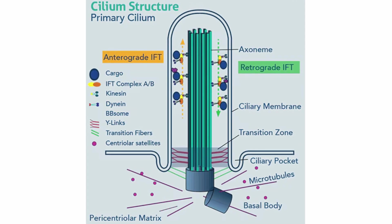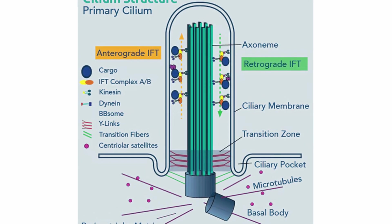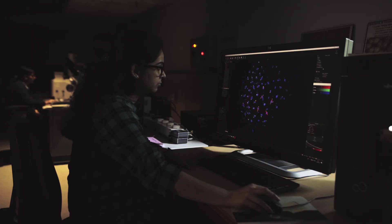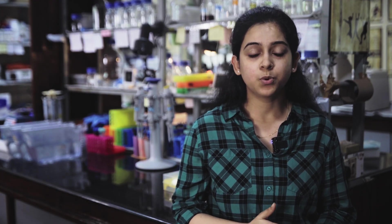We are also looking into another important cellular structure, the primary cilium, which originates from the centrosome when the cell is not dividing. The primary cilium is essential for many cellular processes like sensing, cell signaling, and maintenance of tissue homeostasis. Any structural or functional defect in the primary cilium leads to a group of congenital disorders known as ciliopathies.